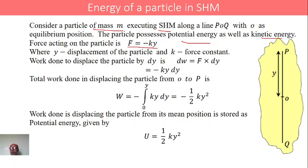Now let us consider the particle at the mean position O, displacing from O through a small distance dy. The work done to displace the particle from the mean position O through a distance dy is given by: work done equals force into displacement. Since F equals minus ky, therefore dW equals minus ky dy.